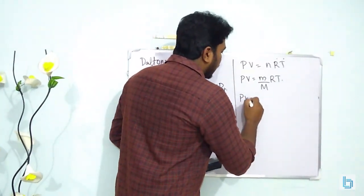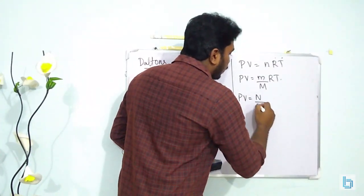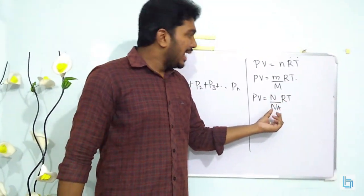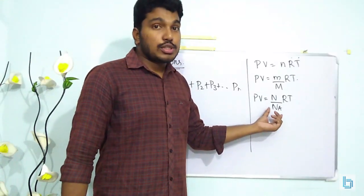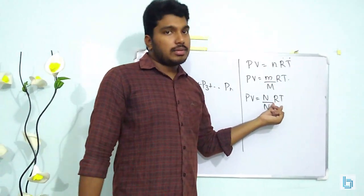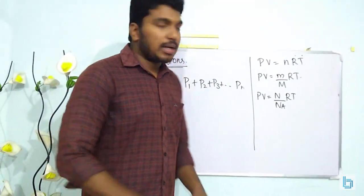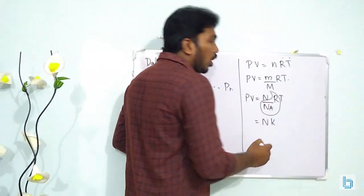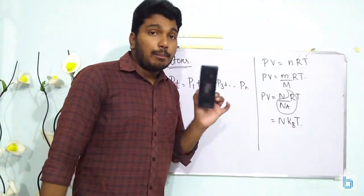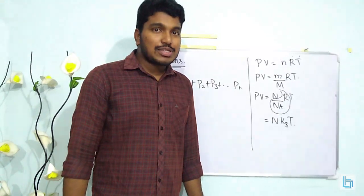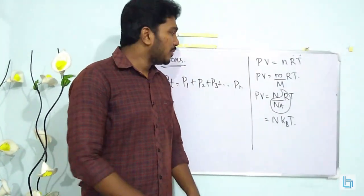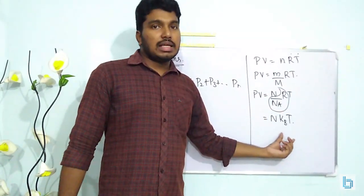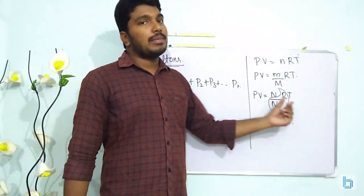Another form is PV = (N/Nₐ)RT, where N is the number of molecules and Nₐ is Avogadro's number (6.023 × 10²³). R/Nₐ = kB, the Boltzmann constant. So PV = NkBT. Remember these three forms: PV = nRT, PV = (m/M)RT, and PV = NkBT. These equations will come in handy in the next session.